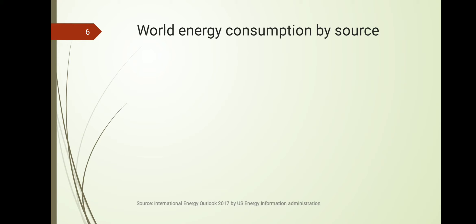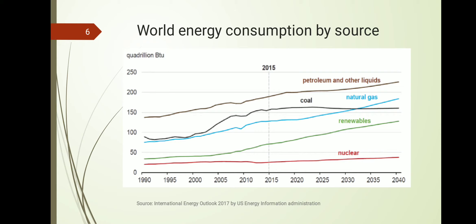Now we look at the significance of bioenergy — why we require it and what the current scenario is. According to the International Energy Outlook by the US Energy Information Administration, data taken up to 2015 and extrapolated forward predicts a considerable decrease in coal usage. Currently coal is a major source of power production, mainly in India and China, but the trend shows it will continually reduce.